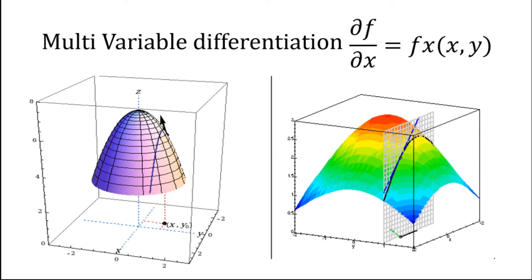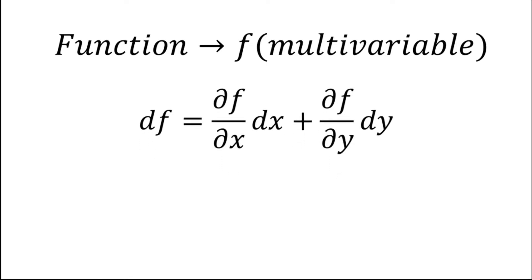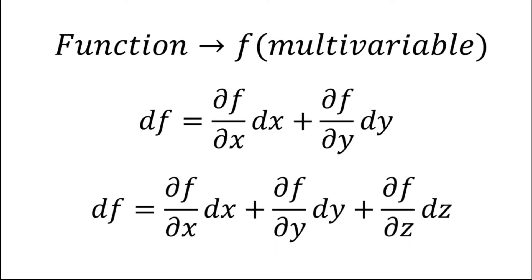Let's look at where we use partial derivatives. If you want to find the differential of a multi-variable function, you take the partial derivative with respect to each variable, multiply it by that variable's differential, and add them all up to get the total differential. So for f of x, y, the total differential df equals the partial derivative with respect to x times dx, plus the partial derivative with respect to y times dy.